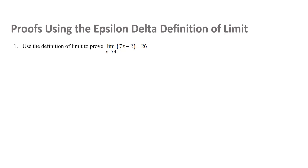We're going to look at a few example problems of proofs using the epsilon-delta definition of limit. This is going to be probably one of the most difficult things you do this semester. That doesn't mean you shouldn't do it, but it's okay to feel like you're struggling the first time. So keep at it, look at some more examples, and ask for help if you need it.